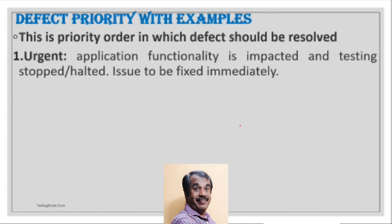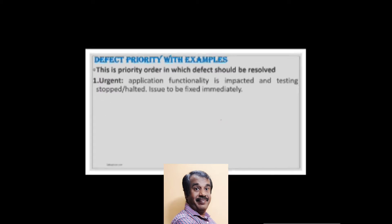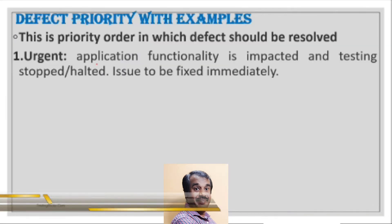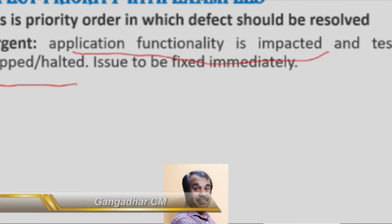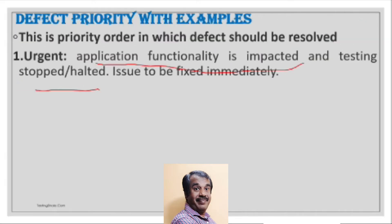Defect priority is classified into four aspects. The first is Urgent, where application functionality is completely impacted and testing is completely altered. This issue needs to be fixed as early as possible or immediately, so we classify such defects as Urgent.